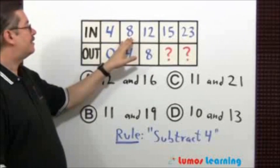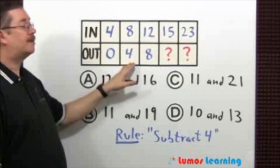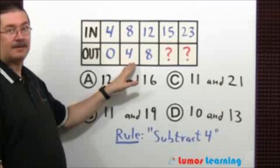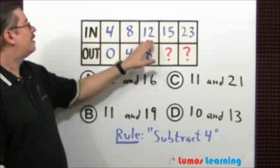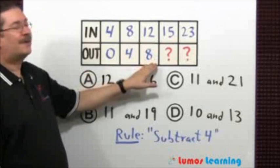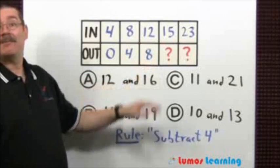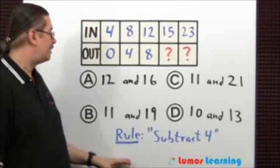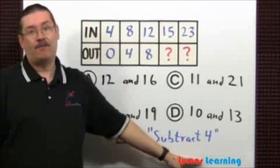Let's try that with 8. 8 minus 4 is 4. Let's keep going. 12 minus 4 is 8. We found the rule: subtract 4.